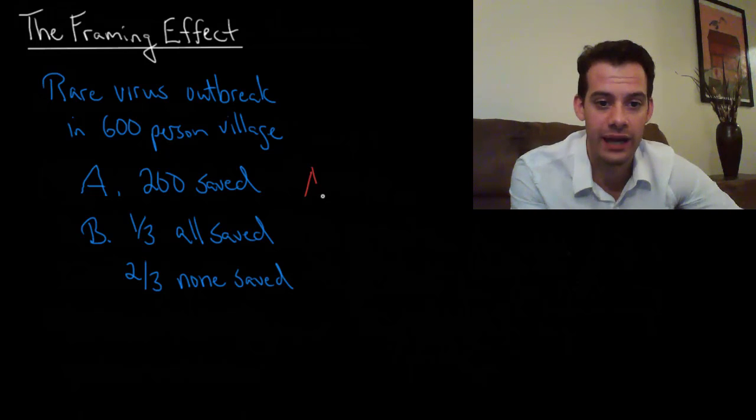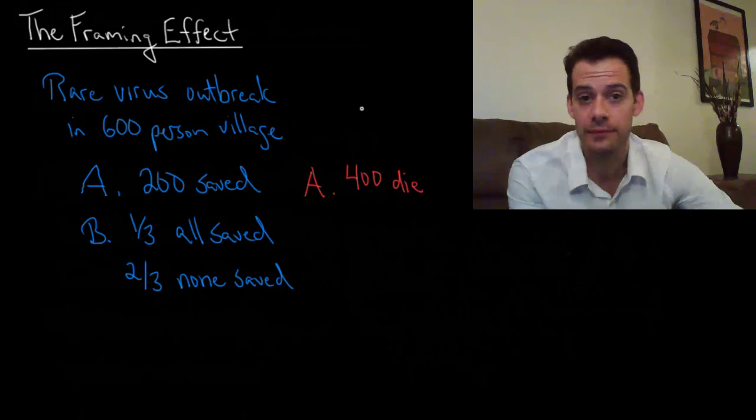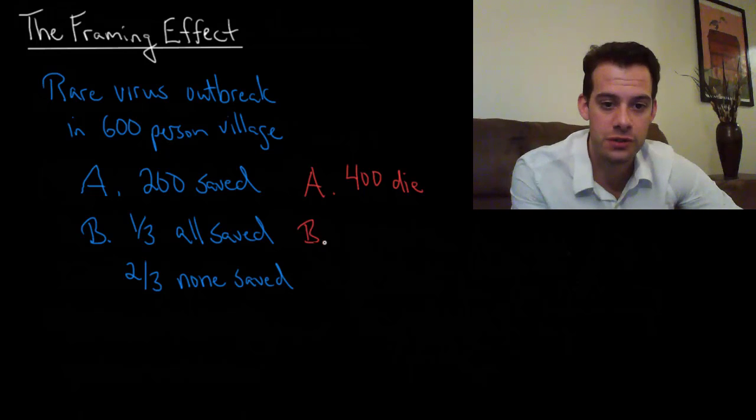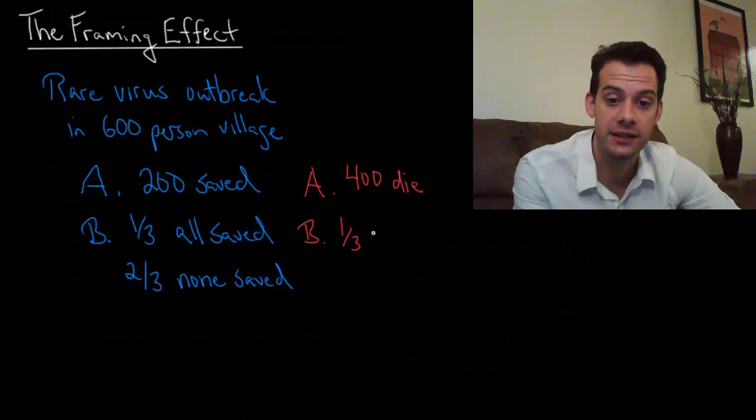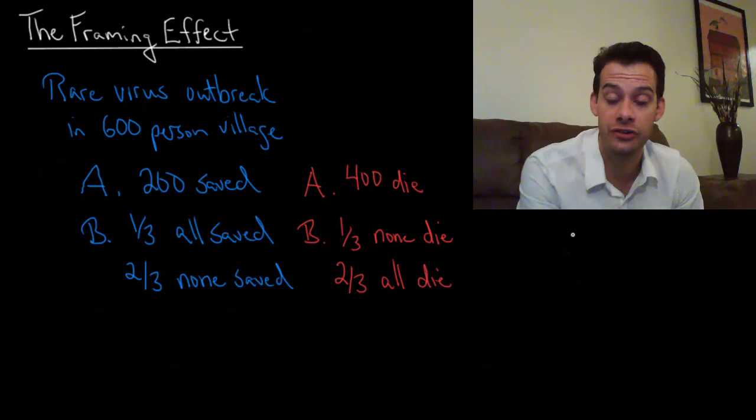So what they received said if you choose program A 400 people will die. If you choose program B then there's a one-third chance that no one will die and a two-thirds chance that everyone will die. Which program would you like to choose?